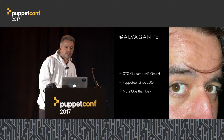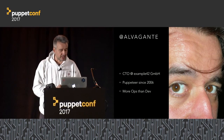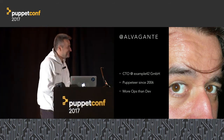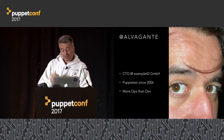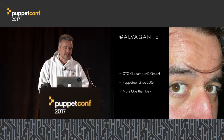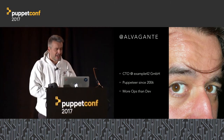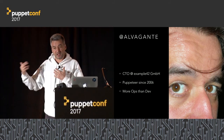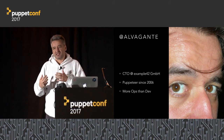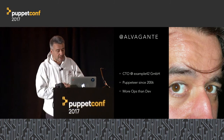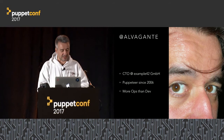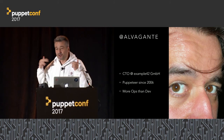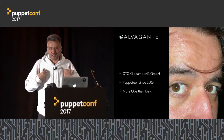I am Alessandro Franceschi, Alvagante on Twitter, GitHub, and so on. I'm CTO at Example 42. CTO is a big word because we are in two, so one is CEO, the other is CTO. I work with Puppet since 2006, so I think I'm quite an older dog in terms of Puppet. I've seen really most of the evolution of Puppet in terms of language and the evolution of the software.